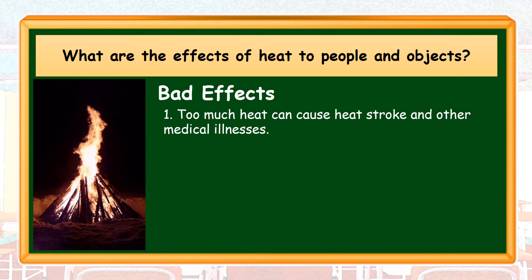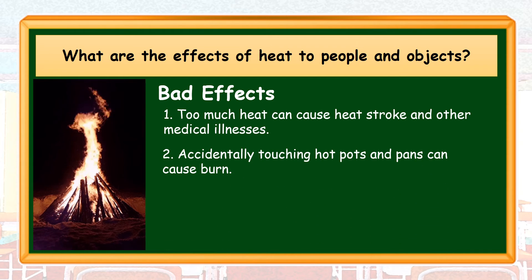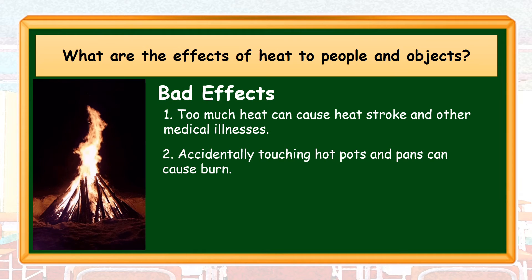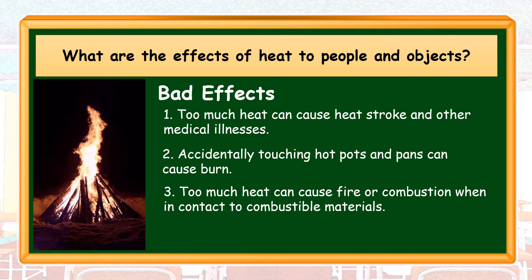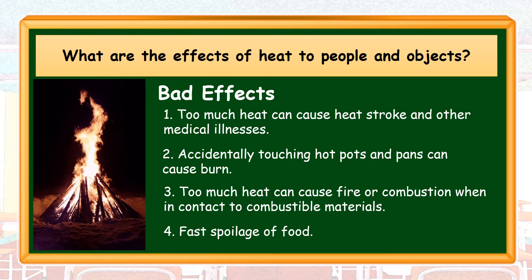For the bad effects. Number 1, too much heat can cause heat stroke and other medical illnesses. Intense heat can give us heat exhaustion that can lead to heat stroke during warm weather. Doctors suggest wearing light-colored clothes, staying hydrated, and avoiding the sun during 10 a.m. to 4 p.m. Number 2, accidentally touching hot pots and pans can cause burns — use pot holders when dealing with hot cooking wares. Number 3, too much heat can cause fire or combustion when in contact with combustible materials. Dried leaves, paper, and cloth are some combustible materials. And number 4, fast spoilage of food. Leftover food during warm season can spoil, so it should be kept in a tight container and put inside the refrigerator once it cools down.